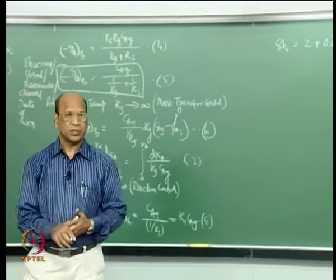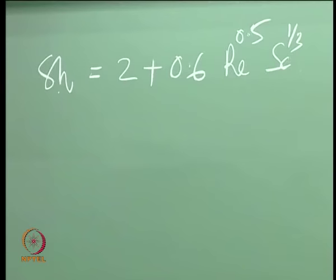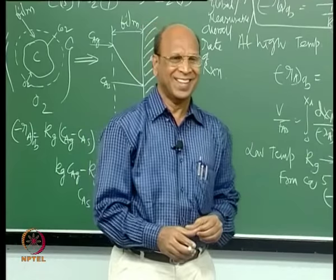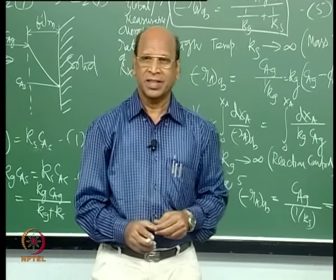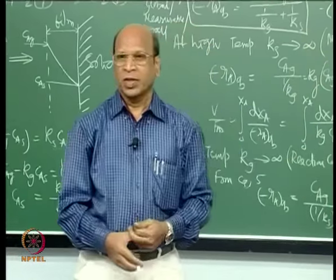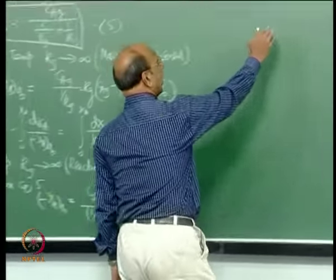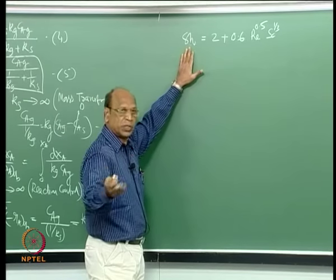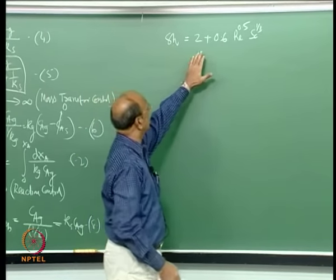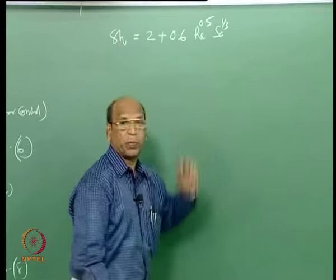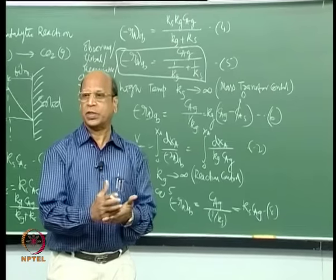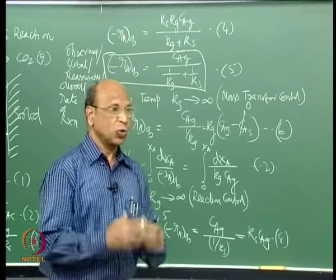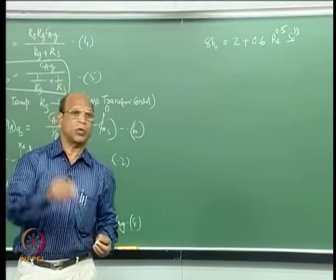Chemical engineers mostly remember only the Reynolds number. In interviews, when asked to name another dimensionless number, students struggle. The next most famous numbers after Reynolds are Schmidt number and Prandtl number. This is why you study transport phenomena — it tells you that all transfers (mass, heat, momentum) share similar phenomena, which is why the Nusselt number correlation has the same form: Sh = 2 + 0.6 Re^0.5 Pr^(1/3).